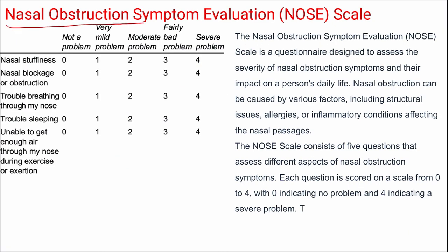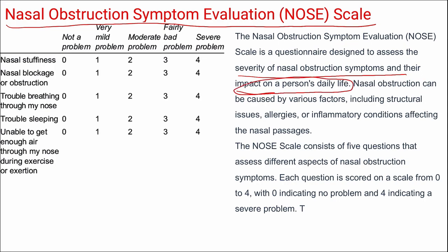Next is the Nasal Obstruction Symptom Evaluation (NOSE) scale, designed to assess the severity of nasal obstruction symptoms and their impact on a person's daily life. It consists of 5 questions on different aspects of nasal obstruction, each scored between 0 to 4, with 0 indicating no problem and 4 indicating a severe problem.